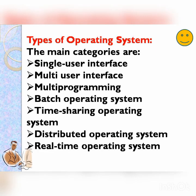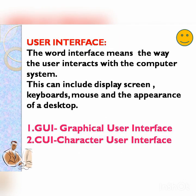So we discussed all the types of operating systems. Next we will discuss user interface. The word interface means the way the user interacts with the computer system. This can include display screen, keyboards, mouse, and the appearance of a desktop. There are two types of interface: GUI and CUI — graphical user interface and character user interface.